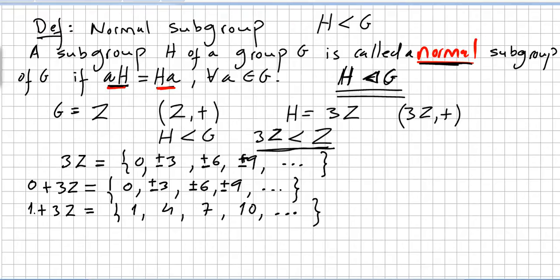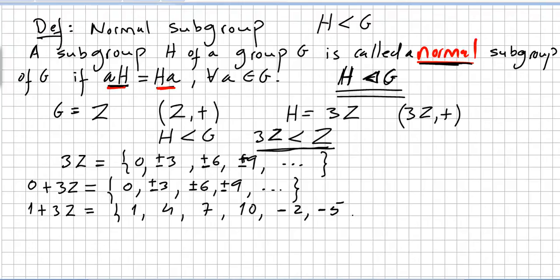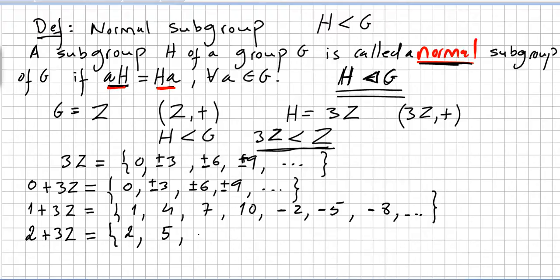Continuing with 1 plus 3Z, the other elements include 1 minus 3, 1 minus 6 which gives minus 5, 1 minus 9 which gives minus 8, and so on. For 2 plus 3Z: 2+0=2, 2+3=5, 2+6=8, 2+9=11.